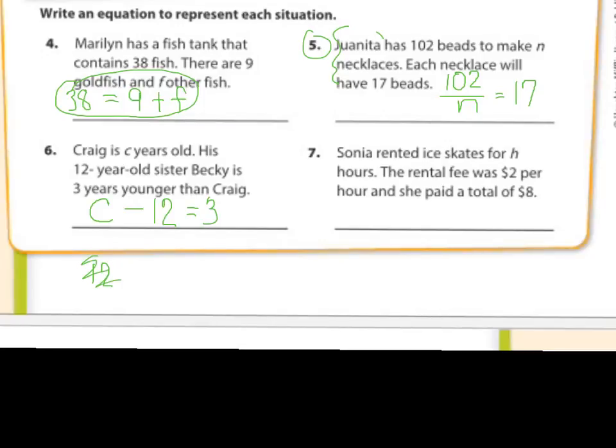number seven. Sonia rented ice skates for H hours. We don't know how many hours, so we'll put the letter H there to represent that. The rental fee was $2 per hour and she paid a total of $8. So it would be two times H. So let's practice putting the number right next to the variable. Two times H. And what does it equal? When they do all that, eight.